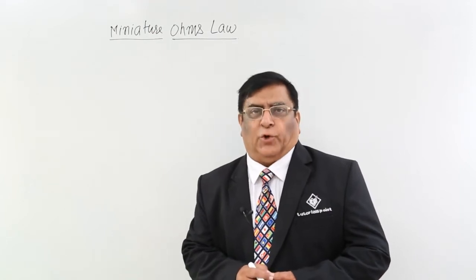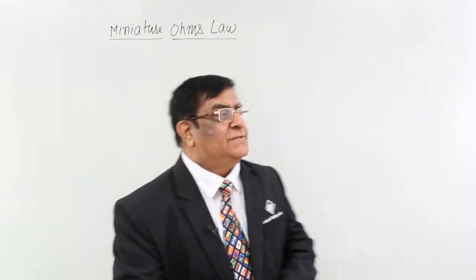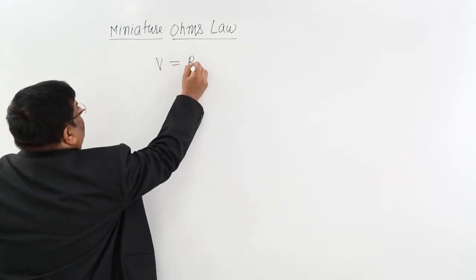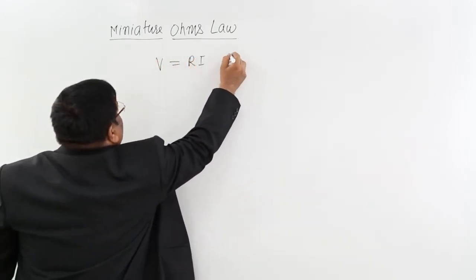Miniature form of Ohm's law. Ohm's law is V equals R times I. This is Ohm's law.